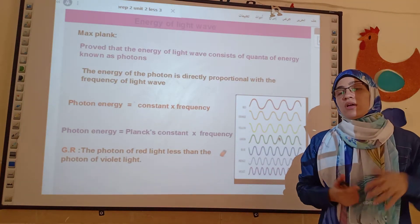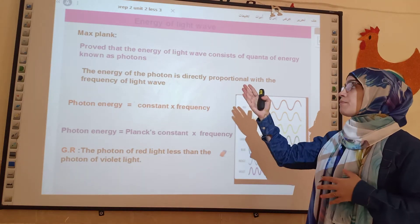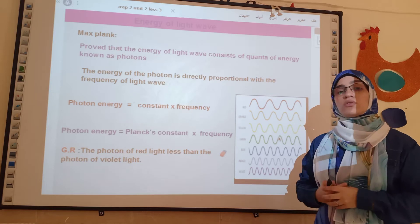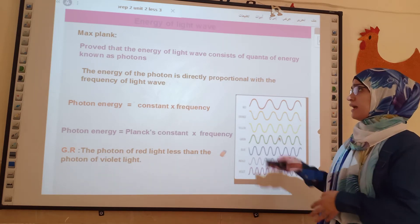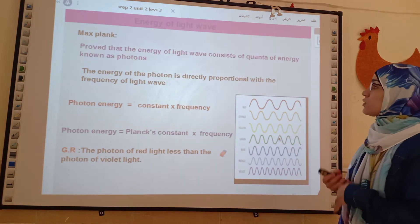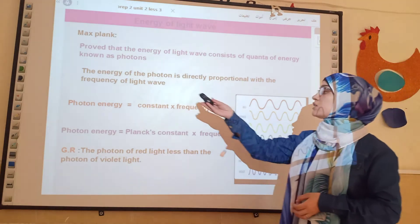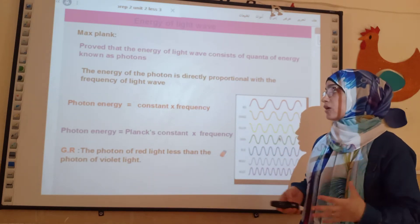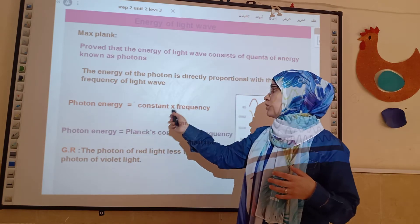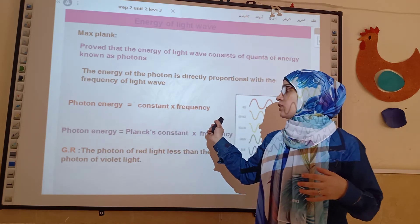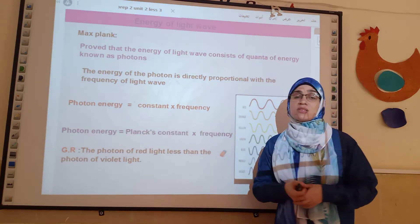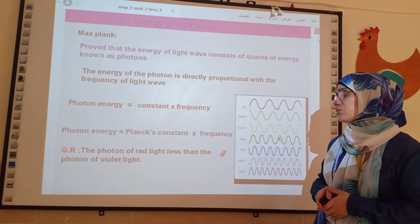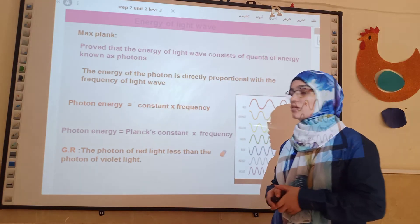Energy of light wave. We have a great scientist called Max Planck. He proved that the energy of light consists of quanta of energy called photons. Max Planck proved that the photon energy equals a constant times frequency, because photon energy and frequency are directly proportional. So, the photon energy of red light is less than the photon energy of violet light. Why? Because the frequency of red light is less than the frequency of violet light.